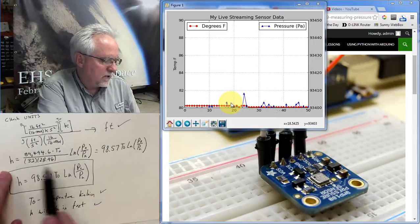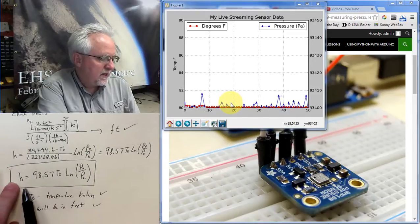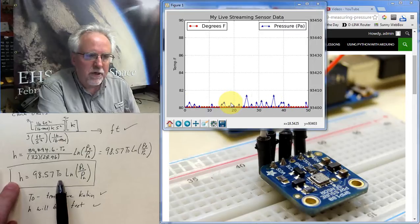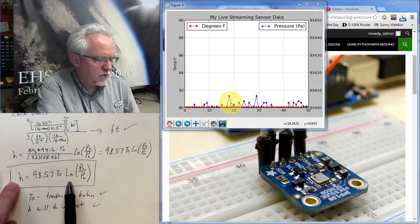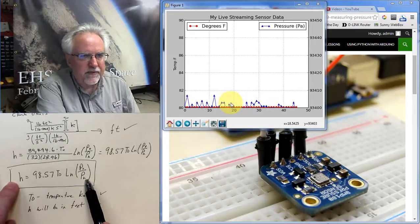And we put those numbers in, and then we sort of multiply them out. And what we end up with is H is equal to 98.57 times the temperature on the ground, times the natural log of the pressure on the ground, divided by the pressure at the height.